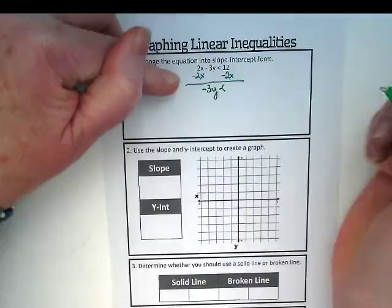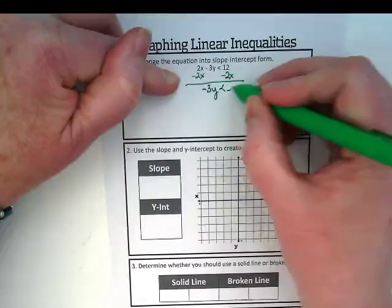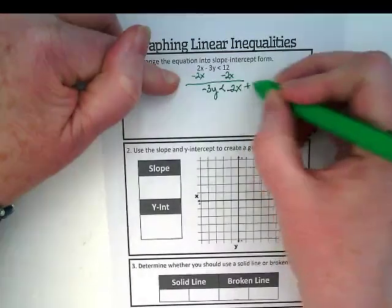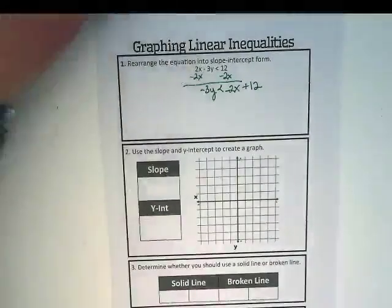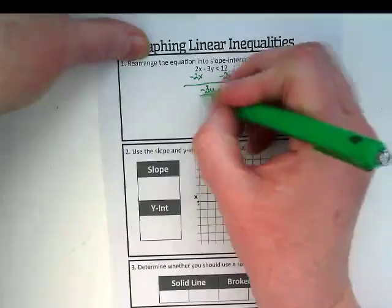Is less than, and I want this in y equals mx plus b form, so I'm going to put that negative 2x here and the plus 12 here. Is the y by itself yet? What's with it? And we're going to divide by the negative 3.